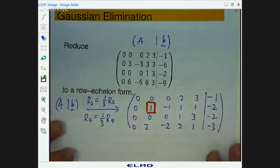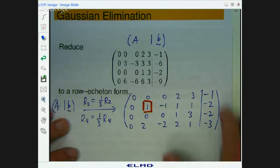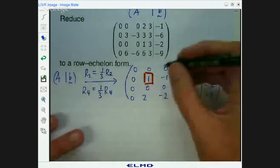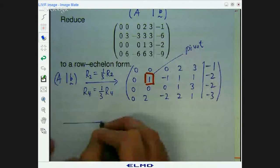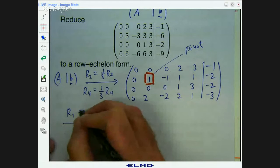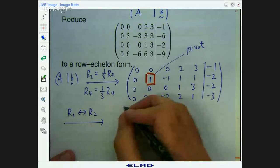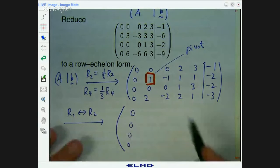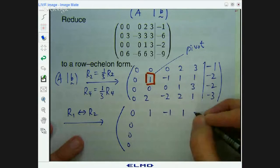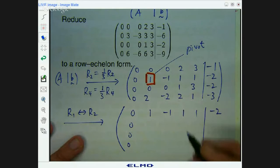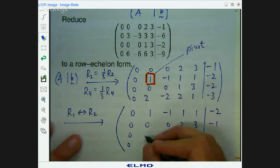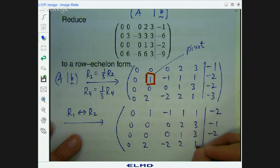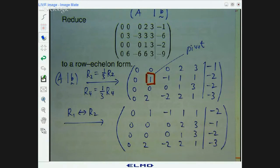So we're going to swap row one and row two. That's a row operation. So that's my pivot entry, pivot element. So I'm going to record that as the following. Row one is going to get swapped with row two. So we've got all zeros here. That's not going to change. So then I'll have one, negative one, one, one, negative two. I'm going to have zero, zero, zero, two, three, negative one. And the other two rows don't change at all.